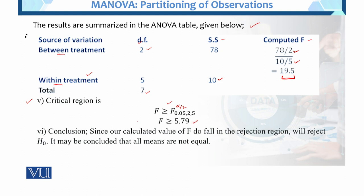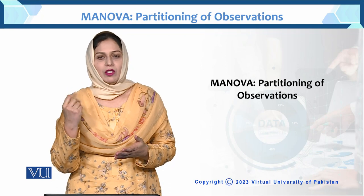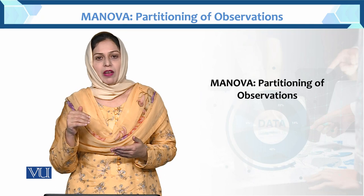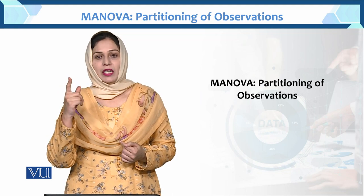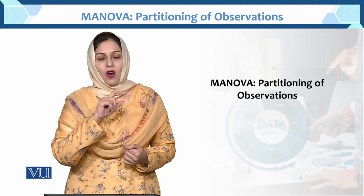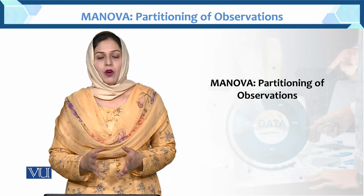The table value is 5.79 and the calculated F is 19.5. Since calculated F (19.5) is greater than the table value (5.79), we reject H₀. We conclude that all means are not equal. In this unequal-size case, we performed MANOVA and rejected the null hypothesis that all group means are equal.